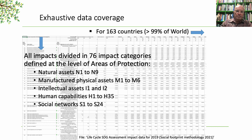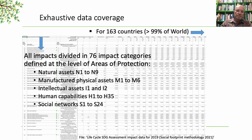According to the natural assets, there are nine indicators; for manufactured physical assets, six indicators; intellectual assets, two; human capabilities, 35; and social networks, 24.